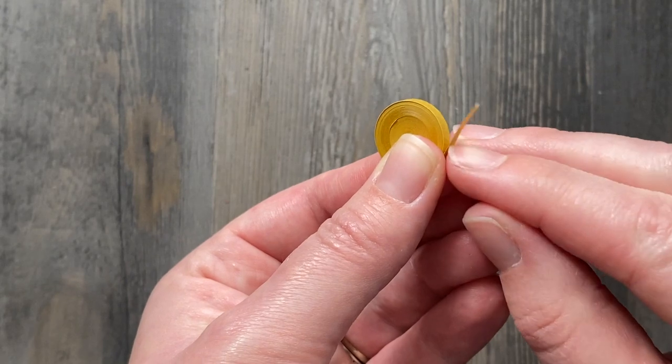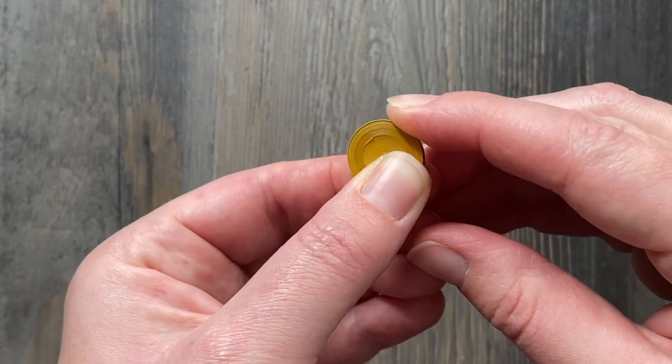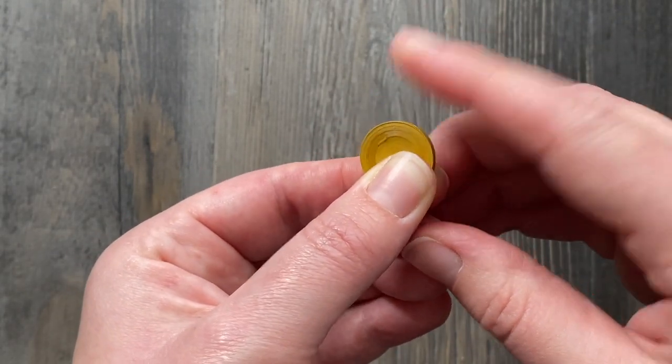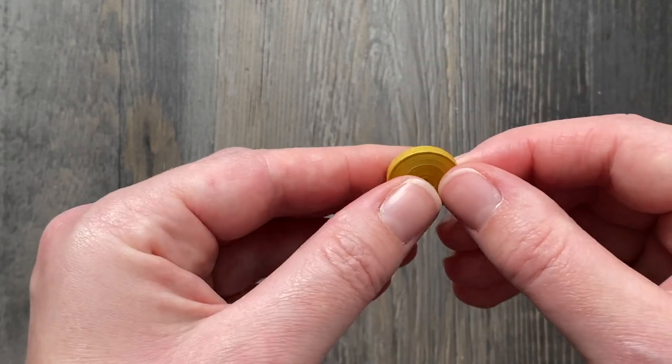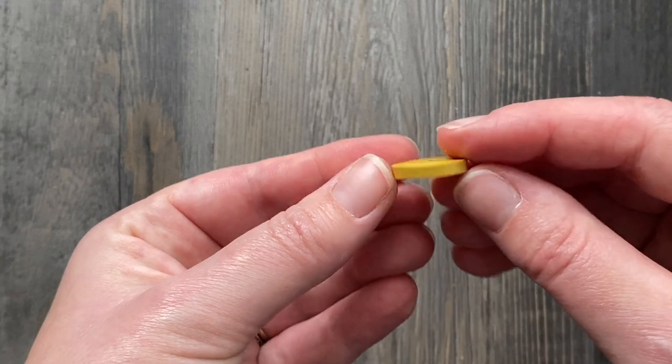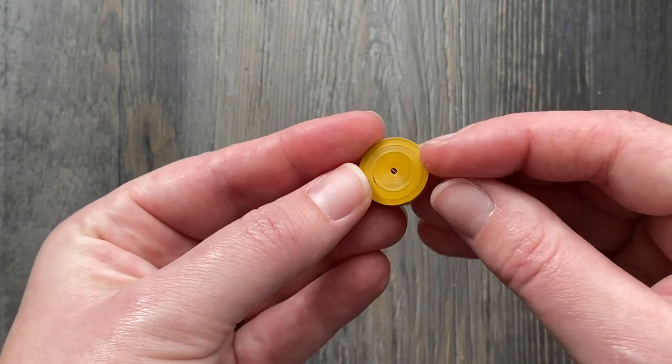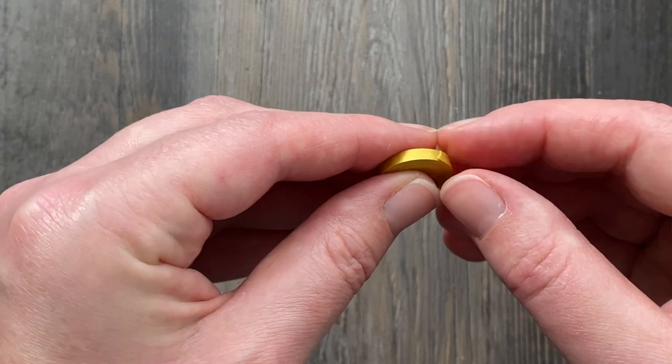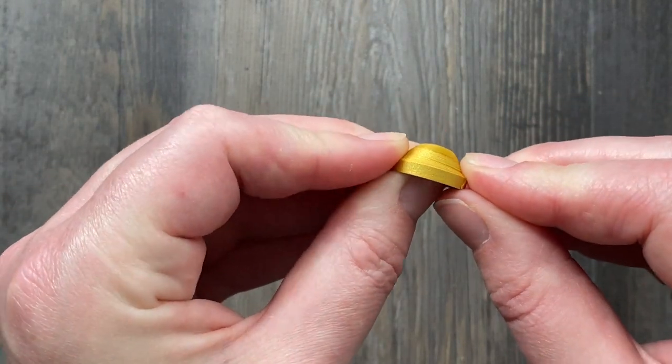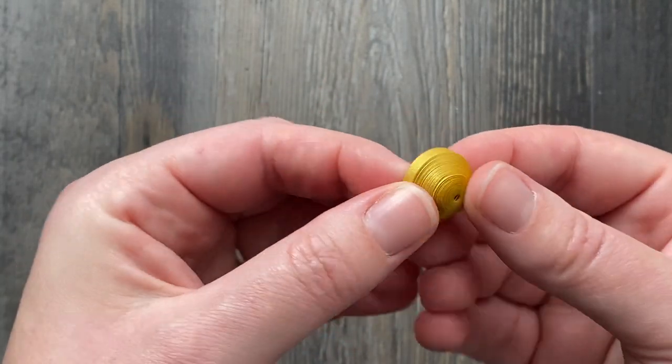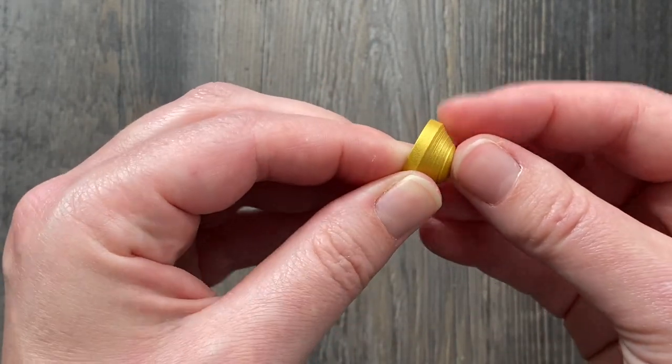Glue down the end to keep that shape secure. And once that sets for a moment you can start molding your bells. And this really couldn't be easier. All you're going to do is push gently into the middle from one side slowly.